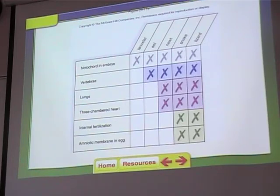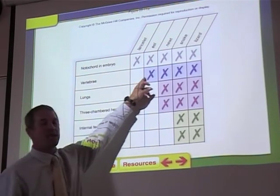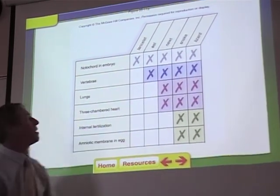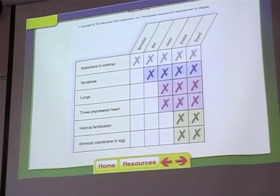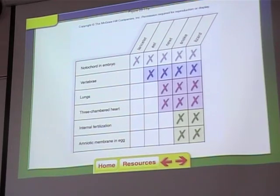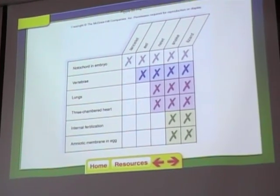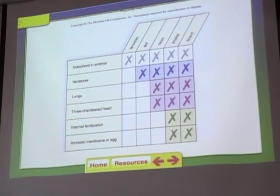Notochord is first. What's the second thing to have evolved? Vertebrae — almost all of them have vertebrae except for the lancelet. So vertebrae probably came about after the lancelet evolved. The notochord evolves and that leads to the lancelet, and then later, after the lancelet had evolved, vertebrae comes about. Some of the lancelets evolved vertebrae and gave rise to the next organism.